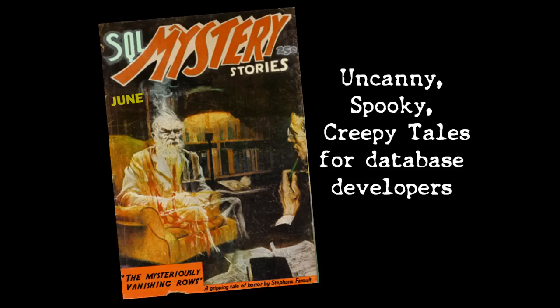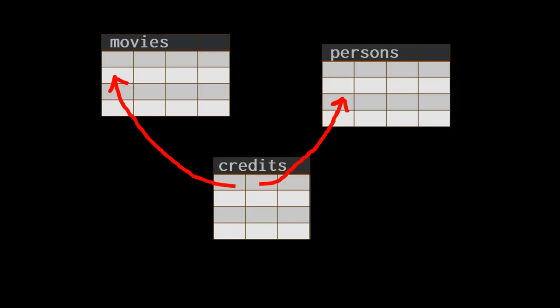When you run a simple SELECT star over the table, you see the data, you would expect it to be returned by your query, and it's not there. Some of the mistakes are beginners' mistakes, but I have also seen experienced developers being caught. For my examples, I will use a small table of movies, a table of persons, and a table called credits that links movies to persons. In credits, the role is indicated by one letter: A for actor, D for director.